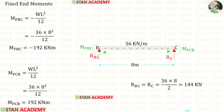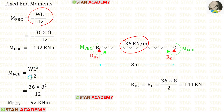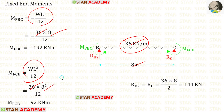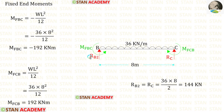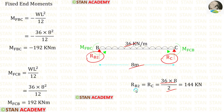Now let us find the fixed end moments and reactions in span BC. In span BC we have a uniformly distributed load of 36 kilo Newton per meter acting for the full span. The formulas to find the fixed end moments are minus WL squared upon 12 and positive WL squared upon 12. Here W is 36 and L is 8. After the calculation we get M_BC and M_CB. To find vertical reactions RB2 and RC, we multiply 36 by 8 and divide by 2, giving 144 kilo Newton each.